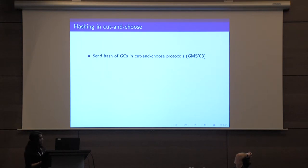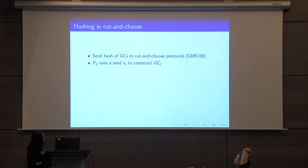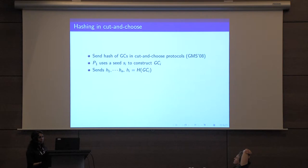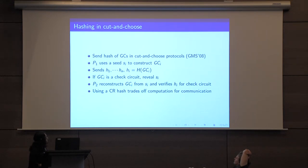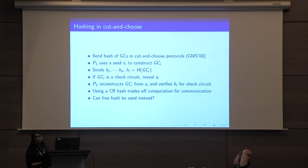A similar idea can be used in general cut-and-choose protocols. This was first formalized by Goyal, Mahazal, and Smith in 2008, where a party P1 uses a seed to construct many garbled circuits and instead of sending all the garbled circuits to party P2, he sends many hashes. If the i-th garbled circuit is chosen to be a check circuit, P1 reveals the seed S_i and P2 can reconstruct the i-th garbled circuit and verify the hash. GMS and all subsequent protocols that use this idea use a collision-resistant hash to trade off computation for communication, and we can ask if our free hash construction can be used in all these protocols.